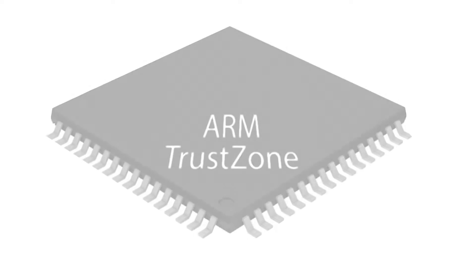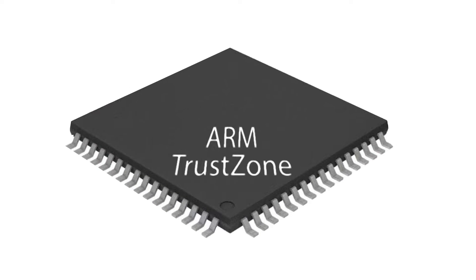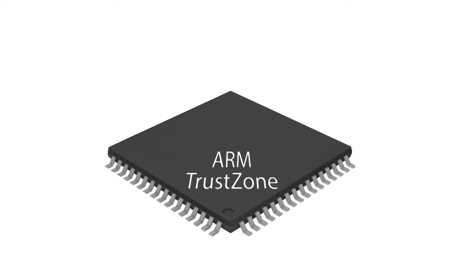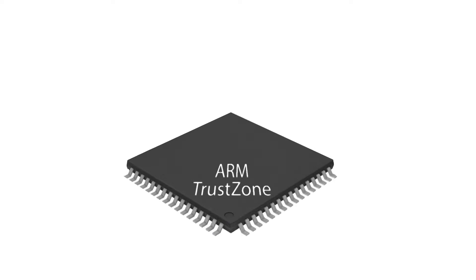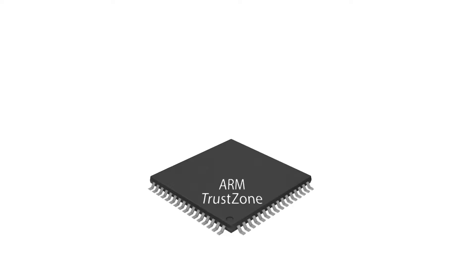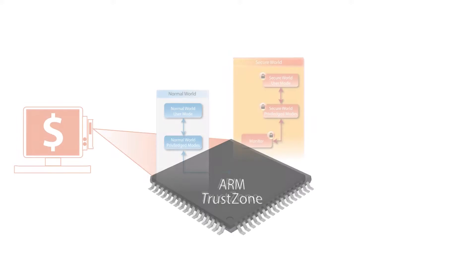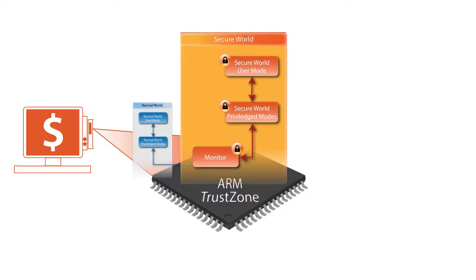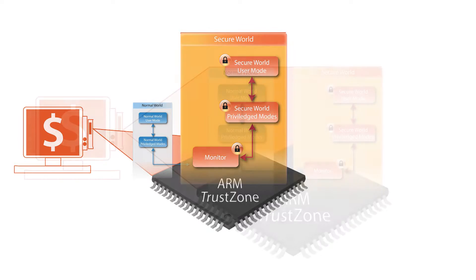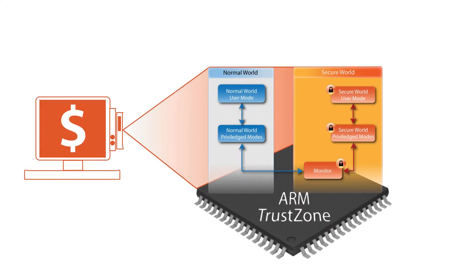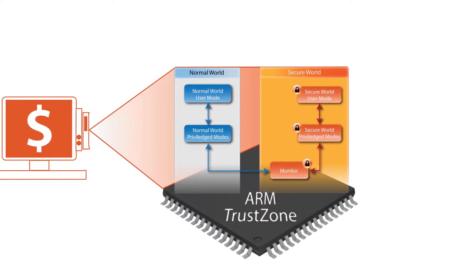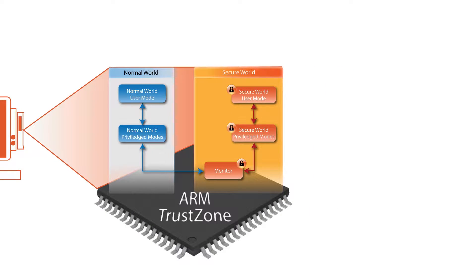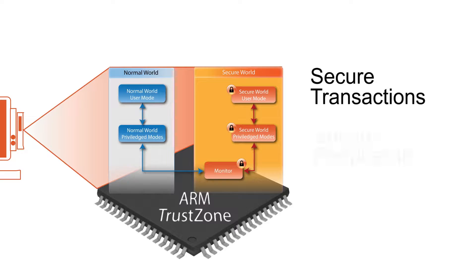ARM TrustZone is an example of a hardware root of trust that chip companies implement as part of their microprocessor designs. ARM TrustZone-enabled microprocessors provide a secure, on-chip enclave. Device makers utilize ARM TrustZone to isolate and protect functions that are critical to securing a device.